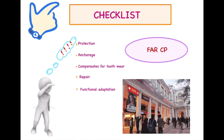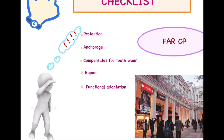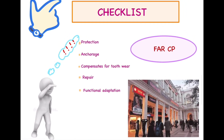The easiest way to remember the five functions is by the mnemonic FAR CP — think of 'Connaught Place is so far.' F stands for functional adaptation: due to continuous wearing away of the incisal and occlusal surfaces, cementum gets continuously deposited at the apices of the root to maintain occlusal harmony. A stands for anchorage: cementum furnishes a medium for attachment of Sharpey's fibers, anchoring the root of the tooth to the alveolar bone.